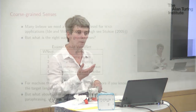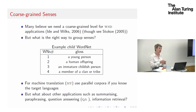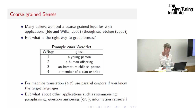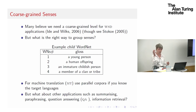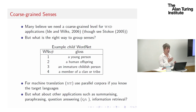Many believed in SenseVal and elsewhere that we needed to go to a coarse-grained level of sense distinction for word sense disambiguation applications, and that would solve all problems. Of course, that makes it an easier task for humans — agreement goes right up, system performance goes right up — it's a much easier task. But there are arguments on the other side that sometimes the subtle distinctions are important.